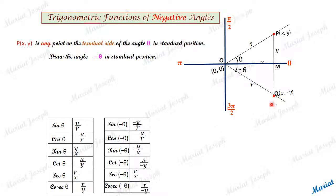Now we are going to make a comparison between these two. Look, x by r and x by r are same. So cos theta and cos minus theta are same. Cos theta and cos minus theta will be equal. The second one I discussed first.